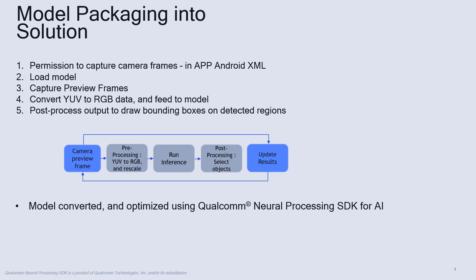This slide details how to package the converted DLC into an Android application as a solution. In the demo application, we need to give permission in the Android XML file for the APK to capture camera frames. Then we need to load the model and start capturing the preview frames.